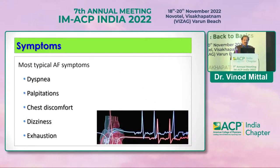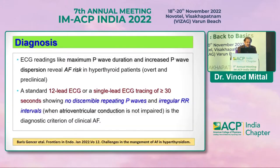Symptoms of AF are non-specific — dyspnea, palpitation, chest discomfort, dizziness, and exhaustion. Diagnosis involves clinical features plus a 12-lead ECG or single-lead ECG with more than 30 seconds of tracing, showing non-discernible repeating P waves and irregular PR intervals.